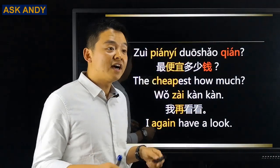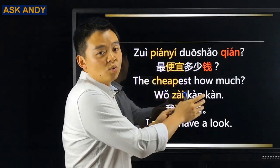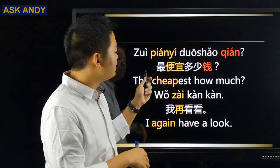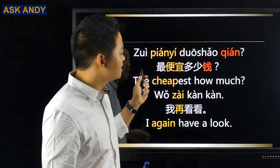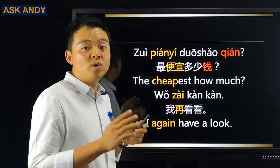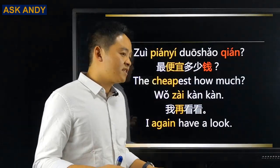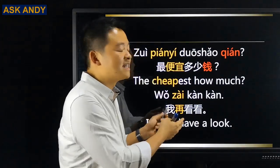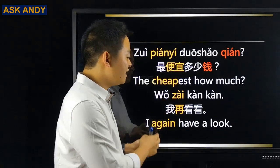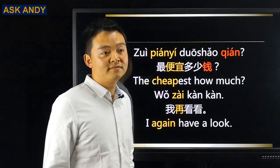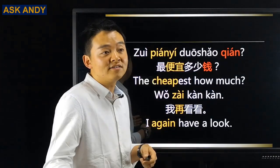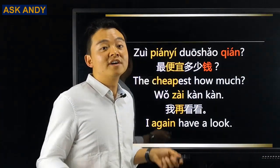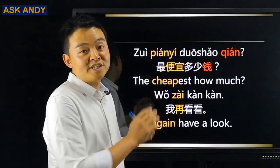If you are still not satisfied with the offer, you can ask: 最便宜多少钱? — 'what's the lowest price?' Here, 最便宜 means 'the cheapest' and 多少钱 means 'how much.' If you're still hesitating, say 我再看看 — 'I'll have another look,' implying you'll go elsewhere. In that case, the shopkeeper will likely offer you a better price. Those are some tips for bargaining in Chinese.